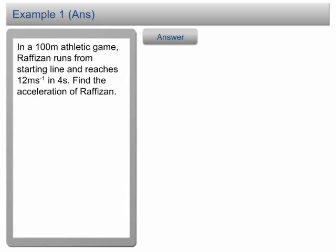As usual, we list down all the information that we have. In a 100 meter athletic game, all runners start from stationary. Therefore, the initial velocity u equals 0. Rafizan reaches 12 meter per second in 4 seconds,